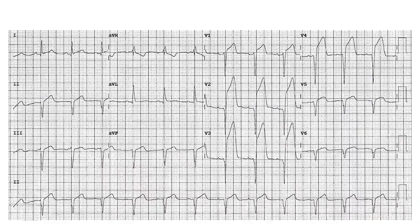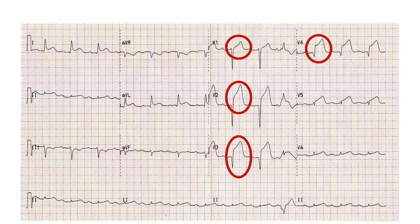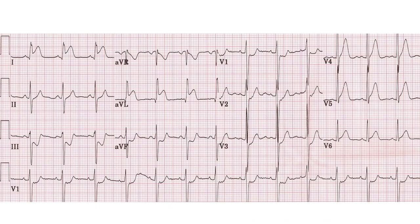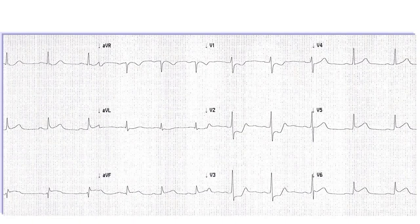Looking at these examples: one of my patients shows quite impressive ST elevation in V1 to V4 — that is an anterior wall STEMI. Another has ST elevation in V1 to V4 plus leads 1, AVL, and V5 — that's an anterolateral wall STEMI. Another example shows ST elevation in 1, AVL, V5, and V6 with no elevation elsewhere — a lateral wall STEMI. And ST elevation in leads 2, 3, and AVF gives you an inferior wall STEMI.